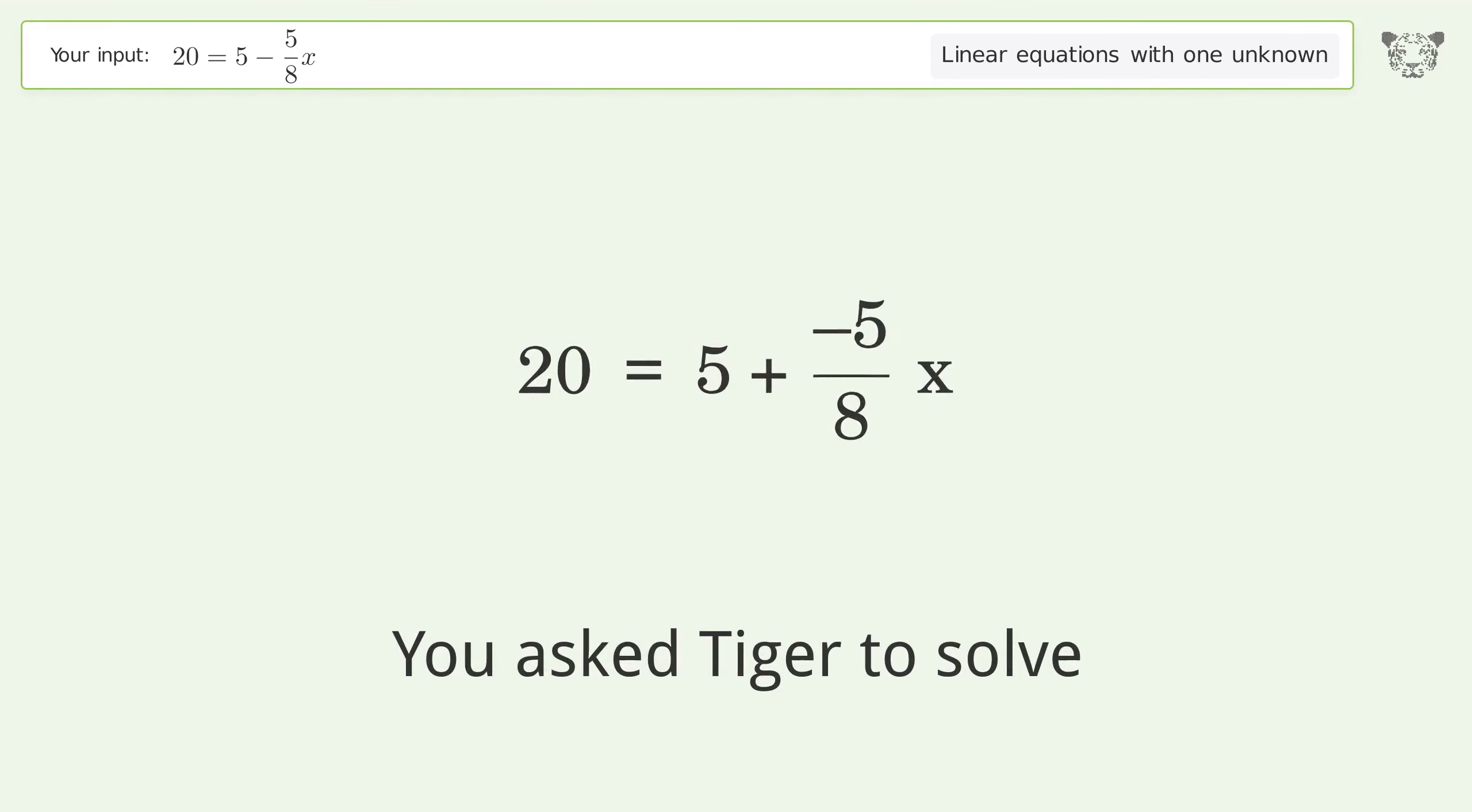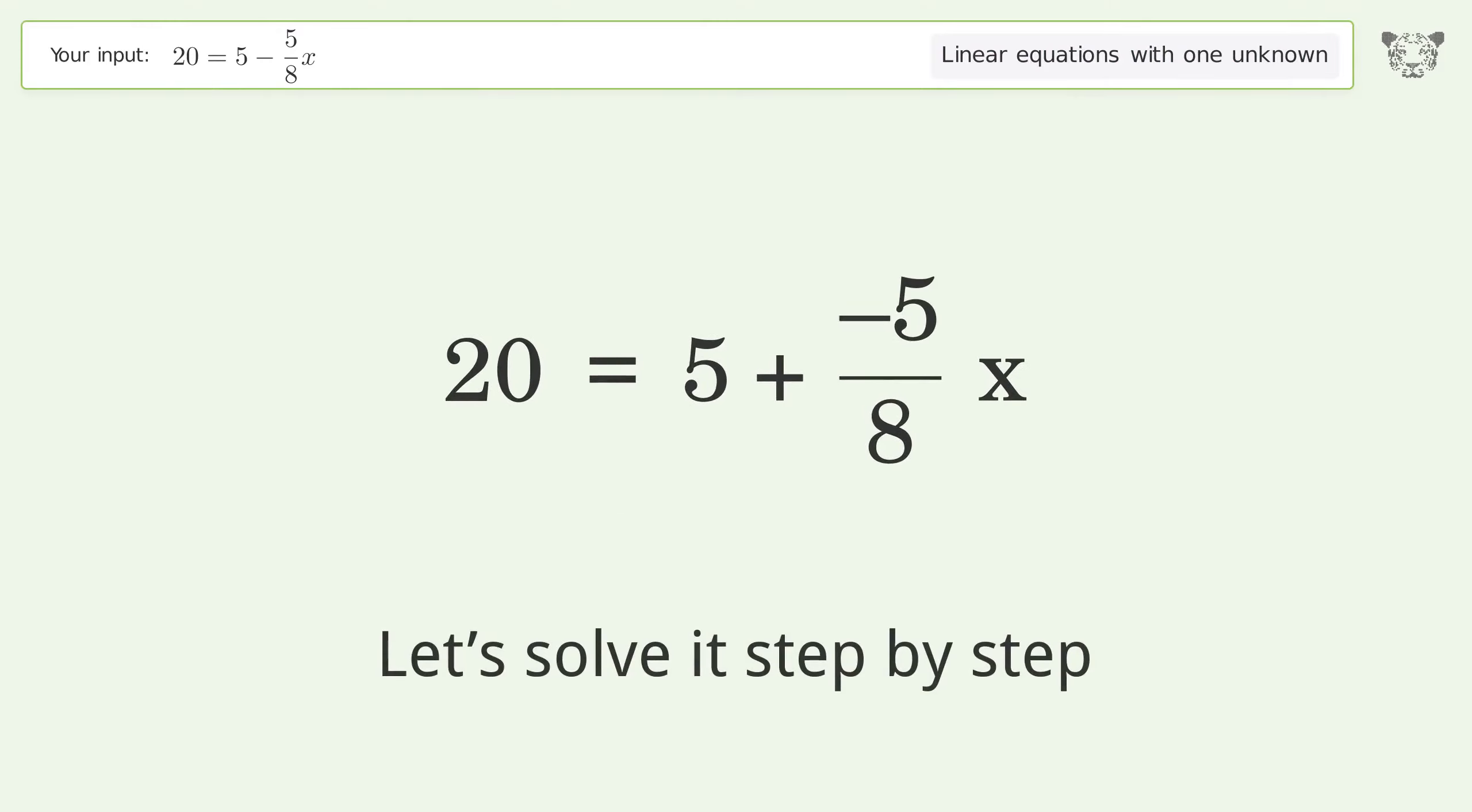You asked Tiger to solve this. It deals with linear equations with one unknown. The final result is x equals negative 24. Let's solve it step by step. Swap sides.